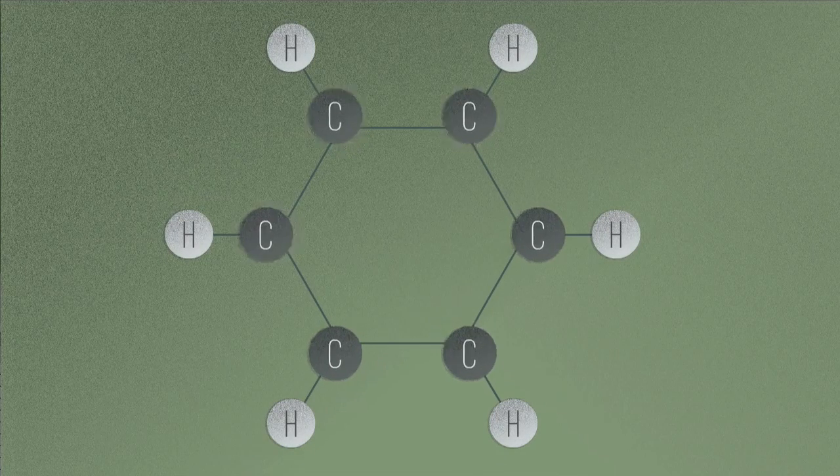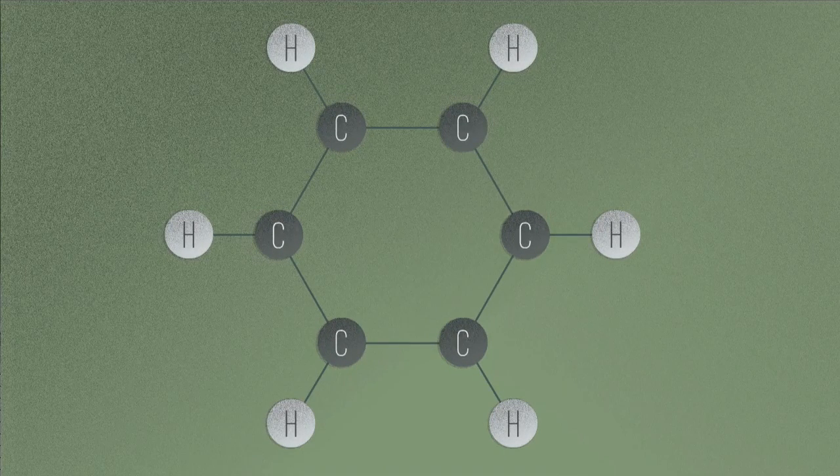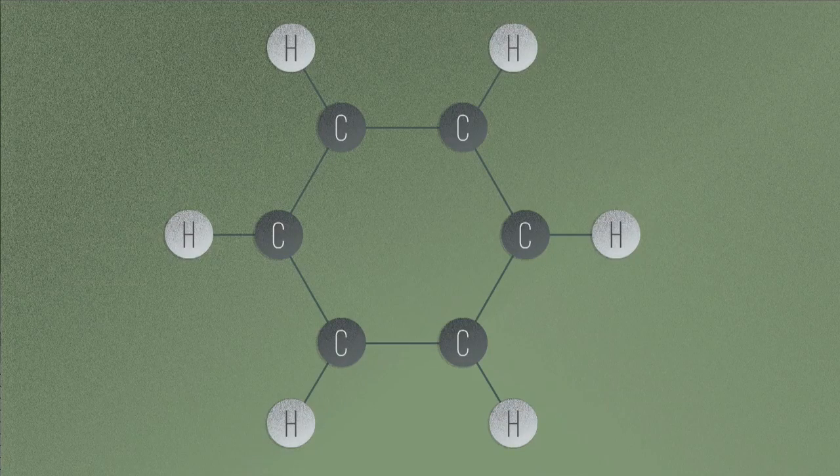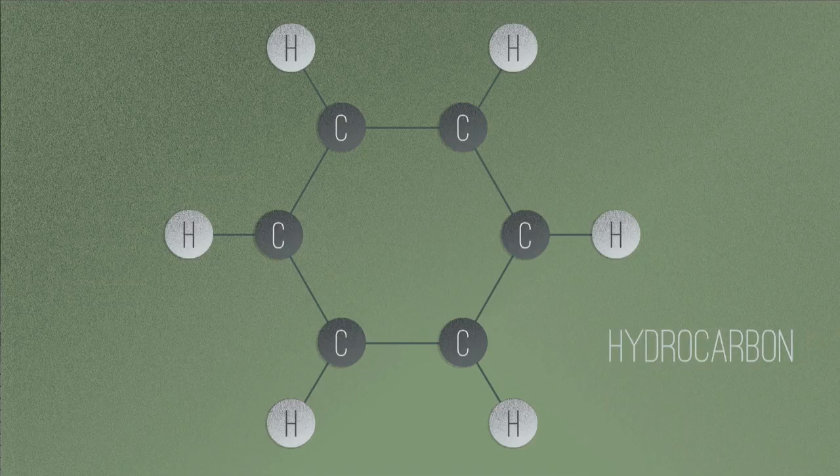On an atomic level, benzene is made up of six carbon atoms covalently bonded in a ring. Each carbon is also covalently bonded to one hydrogen. This makes it a hydrocarbon.